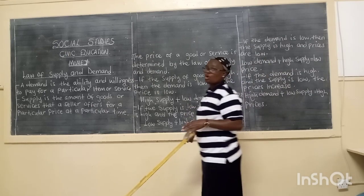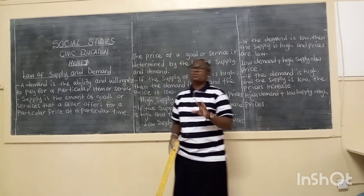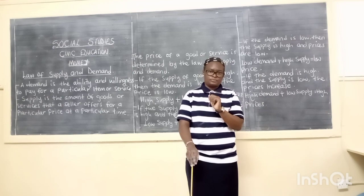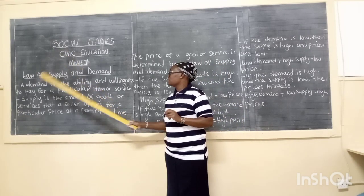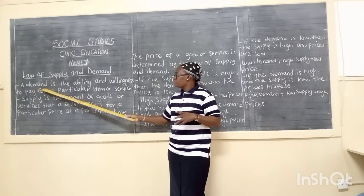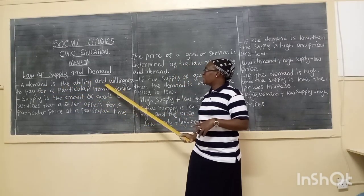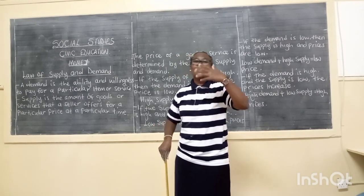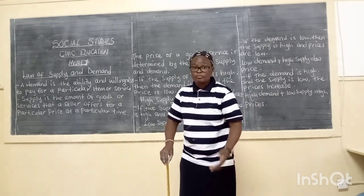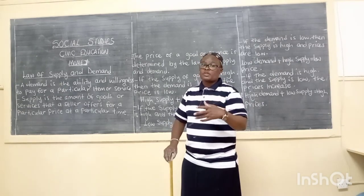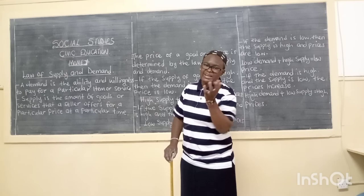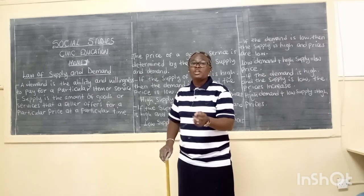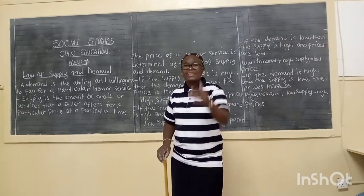So we proceed with the law of supply and demand. We are talking about goods and services. Let's define what demand is. A demand is the ability or willingness to pay for a particular item or service — this is where people are willing to buy something. What determines demand? If goods are in short supply or high supply, it will cause that particular good's price to end up high or low.